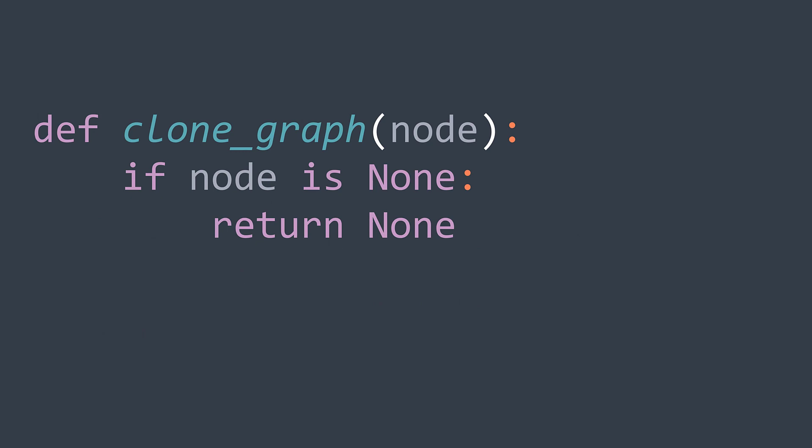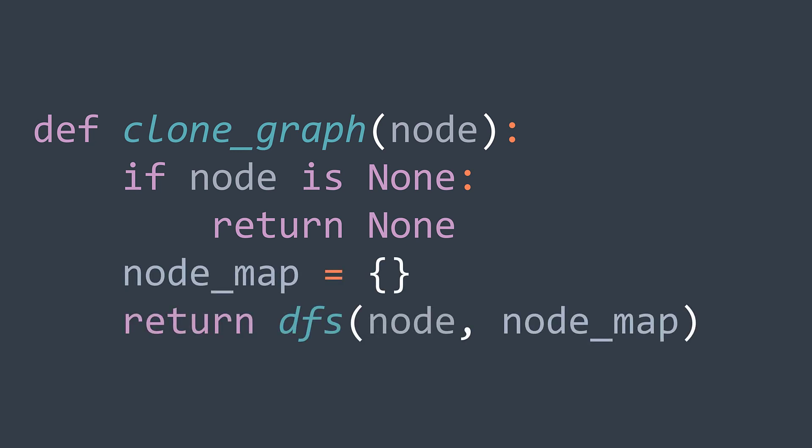And in our main solution function, if node is null, then the graph is empty. We just return null. Else, we create node map, which is empty at the beginning, and return the result returned by the recursive function by starting from the node given as input.